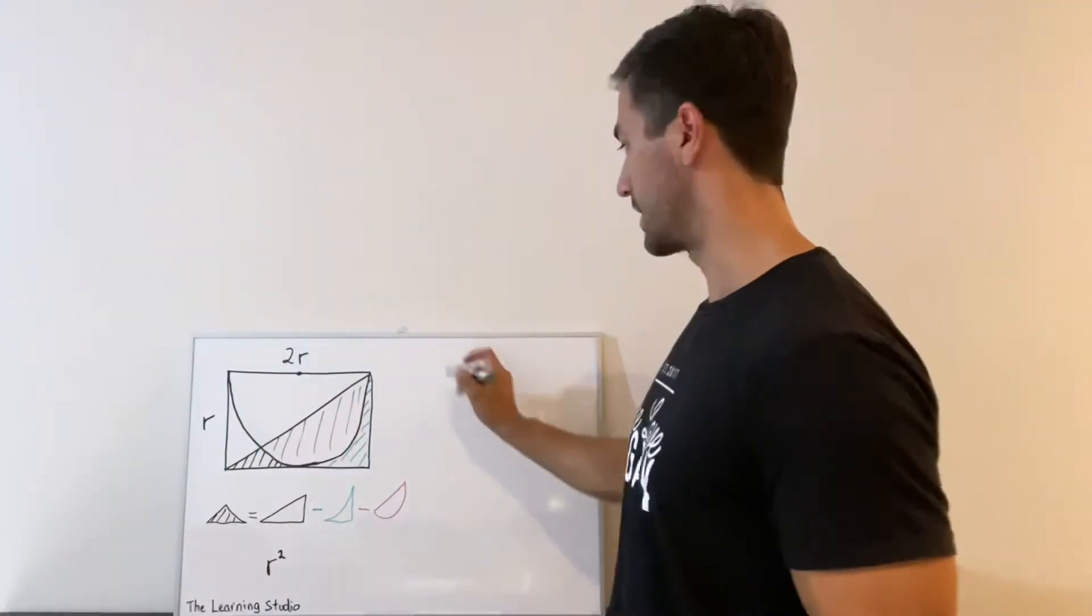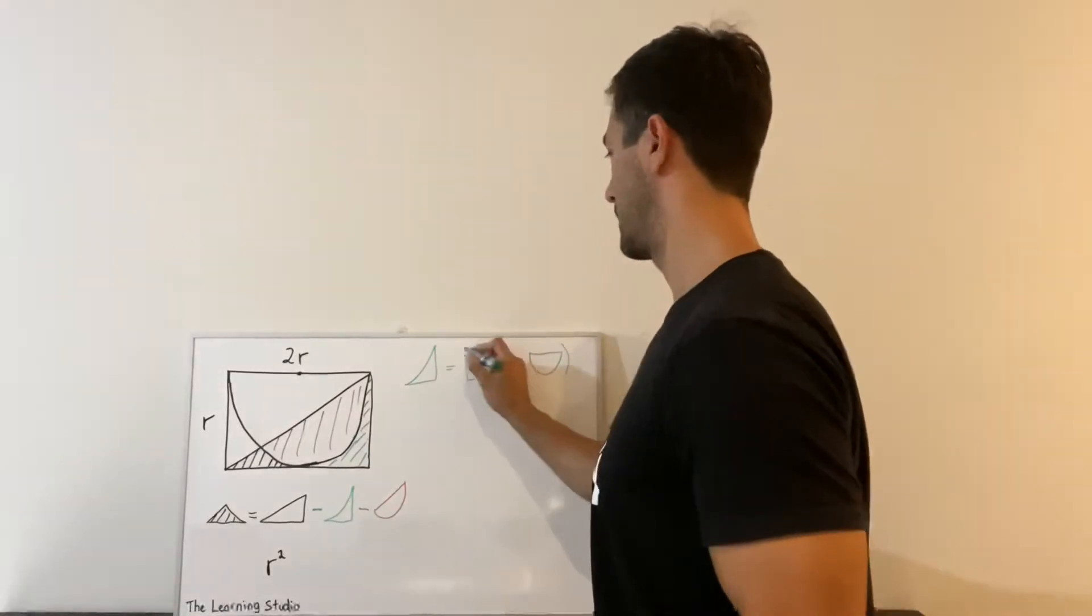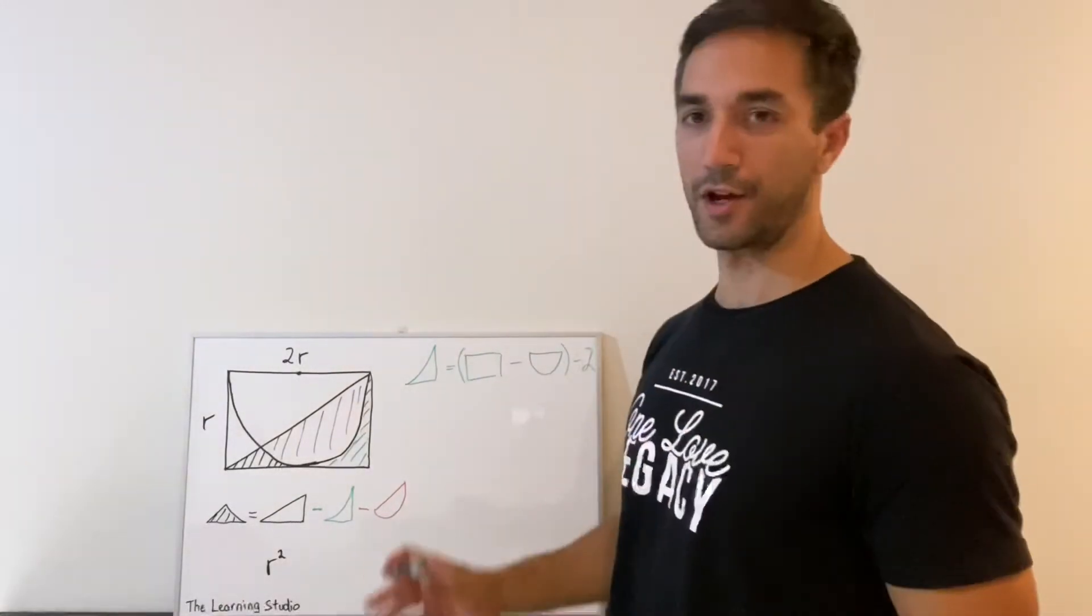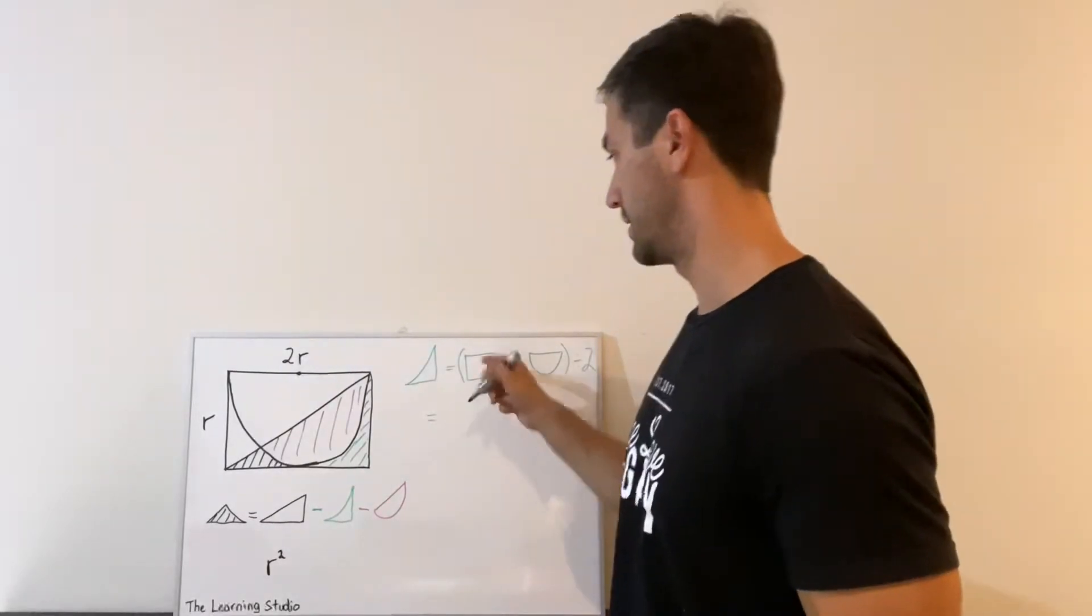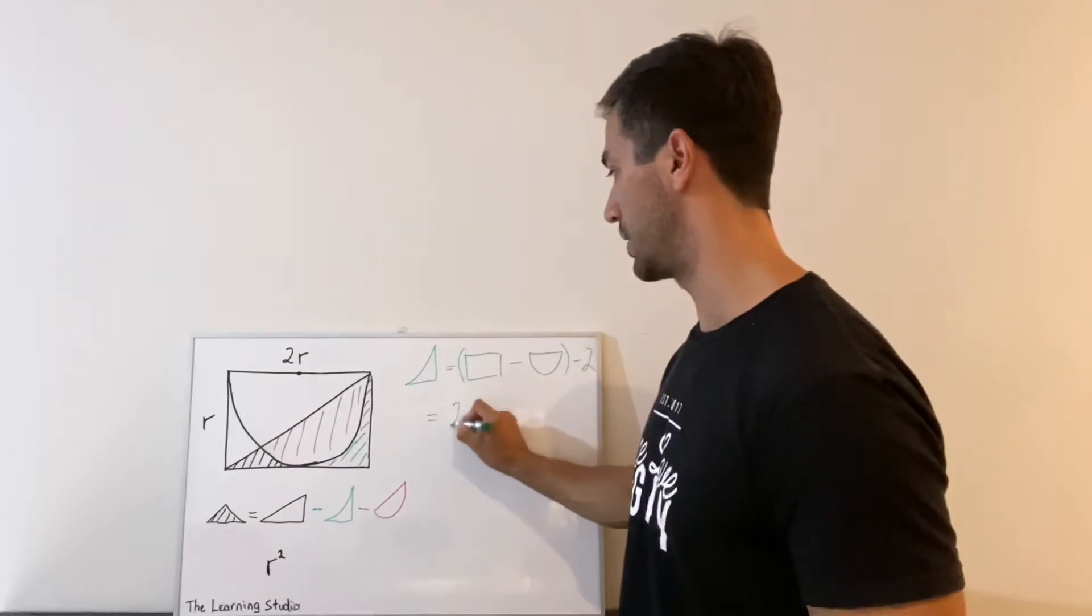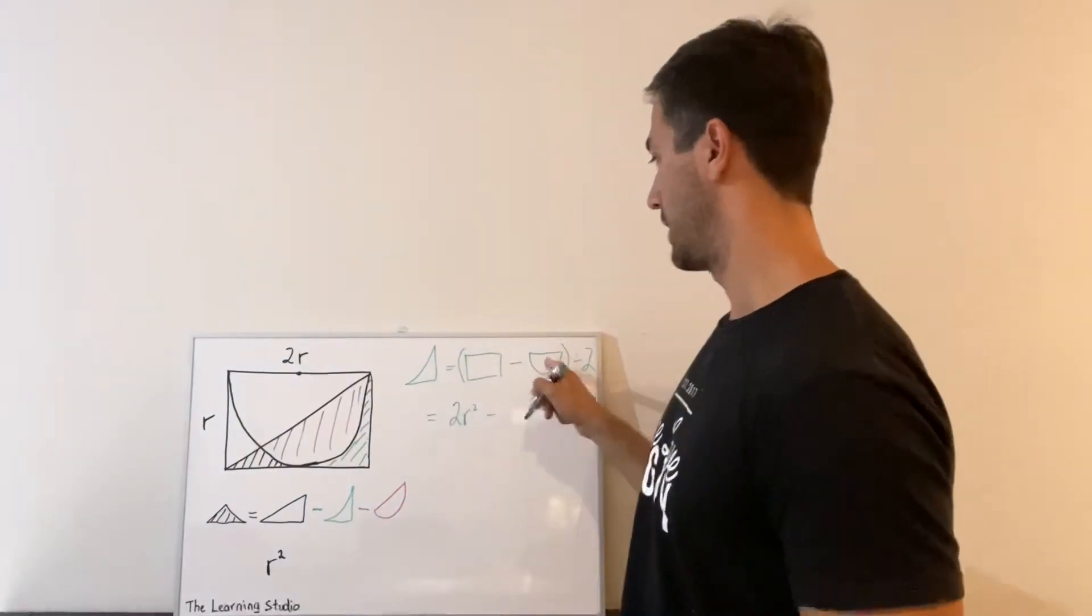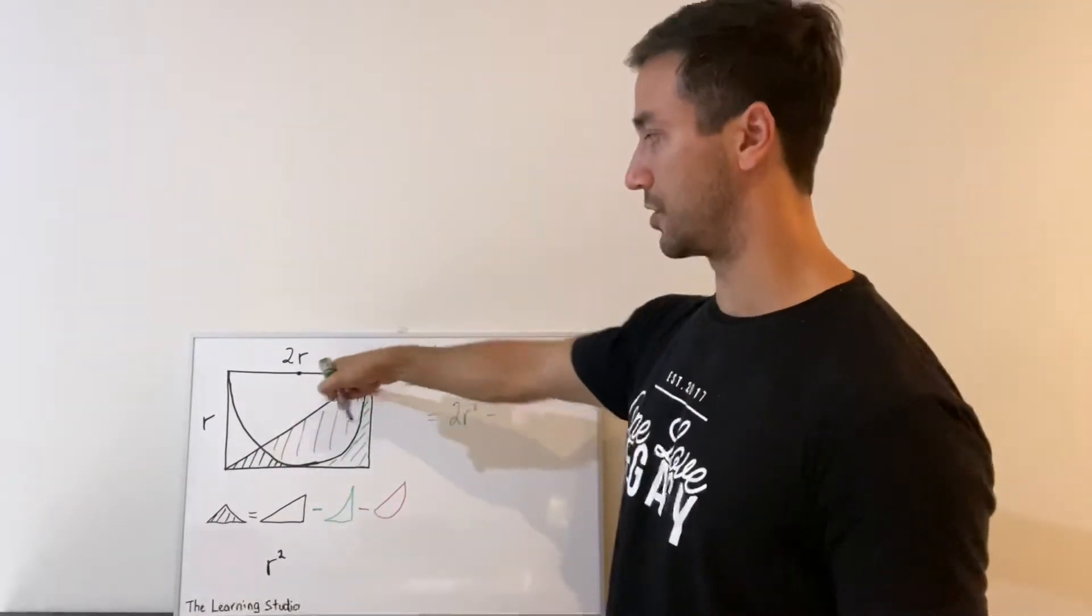Okay, so that gives us this. And both of these shapes, the area is easy to work out. So the area of our rectangle is length times width, which is going to give us two r squared.